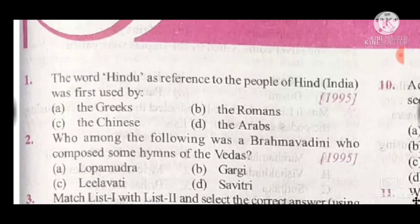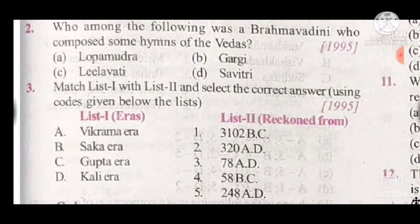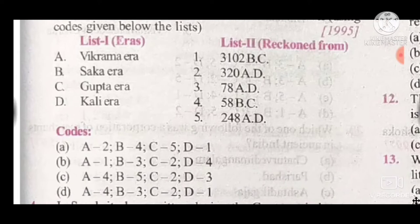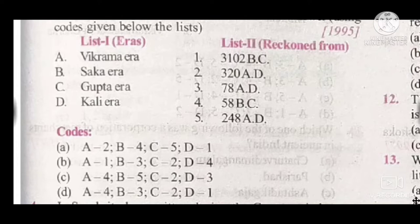Question 3 is a match-list question. The answer is option A-D. Vikrama era belongs to 58 BC, Shaka era belongs to 78 AD, Gupta era belongs to 320 AD, and Kali era belongs to 3102 BC.